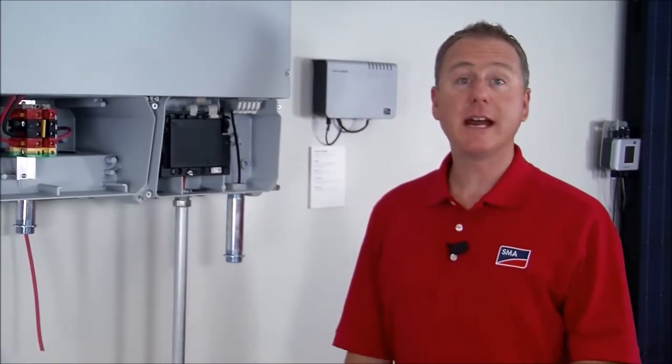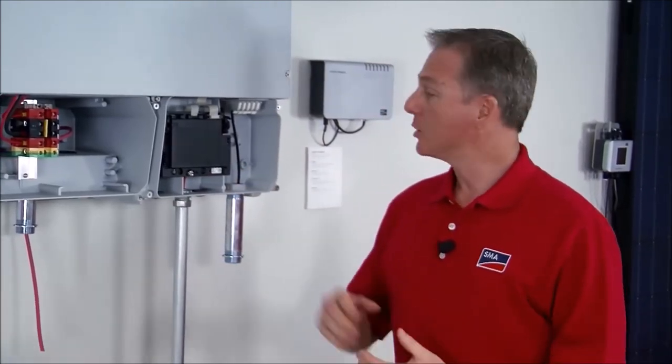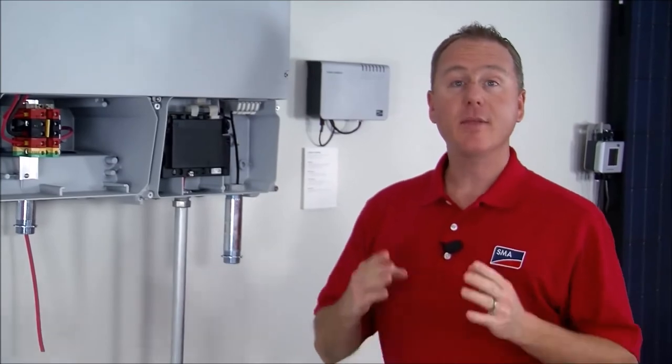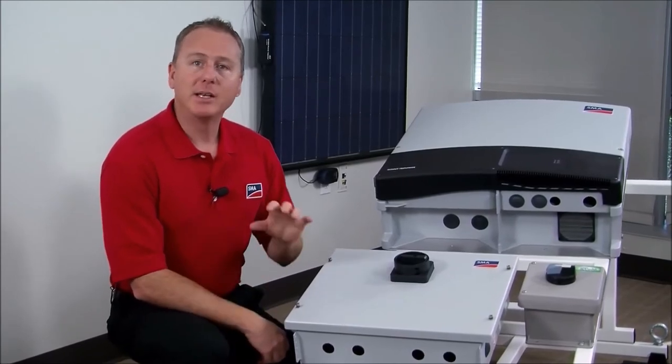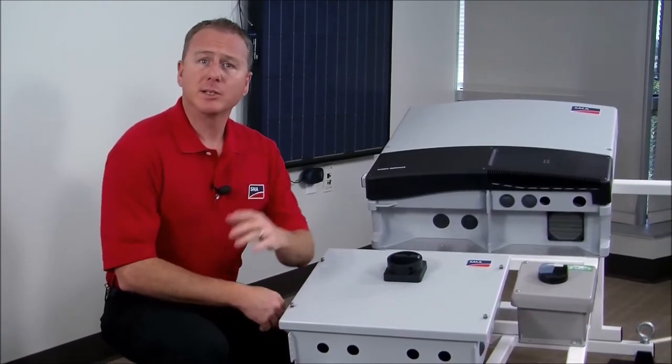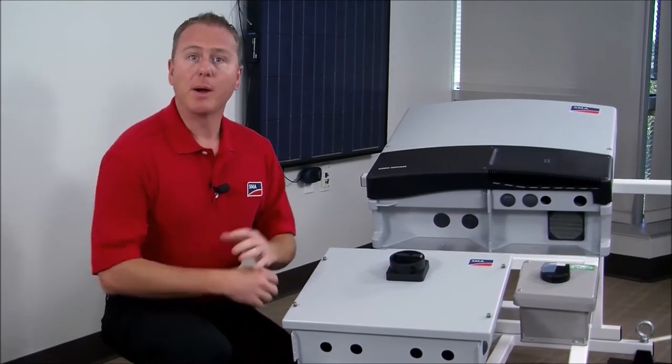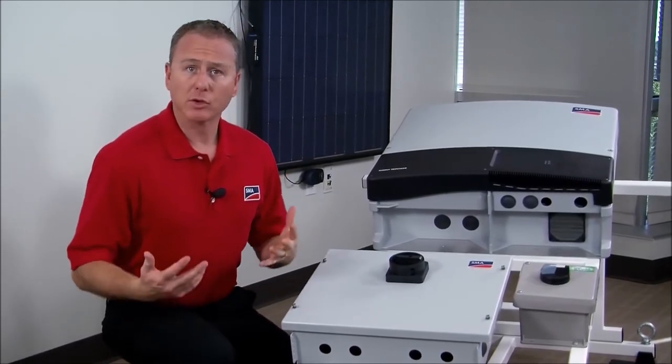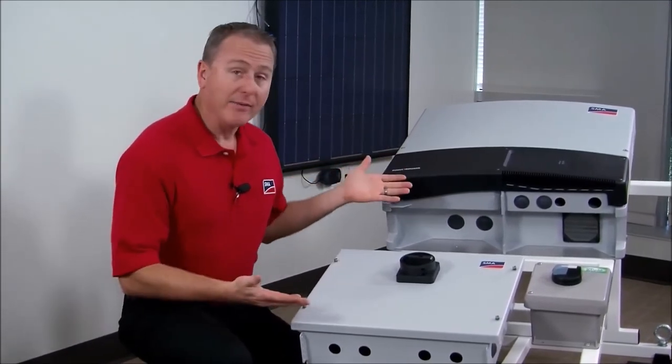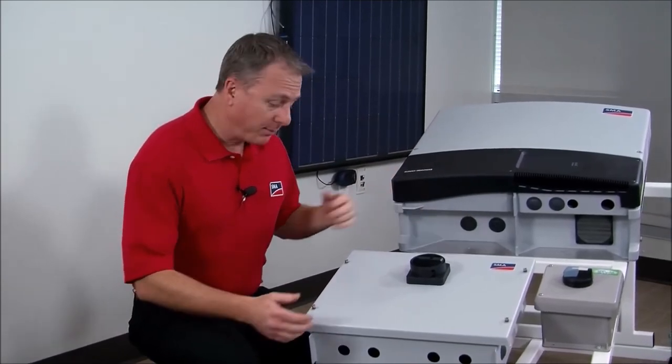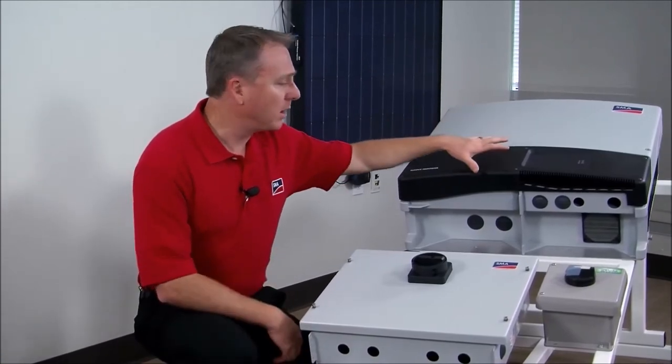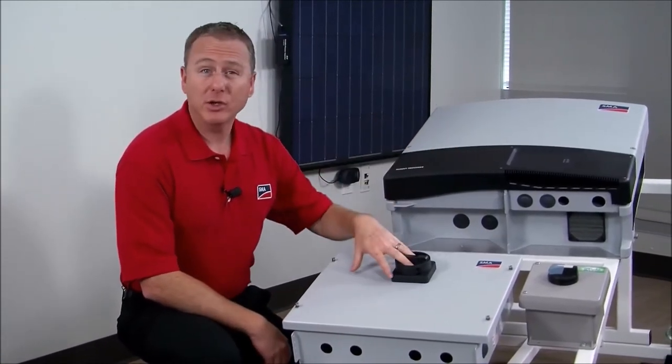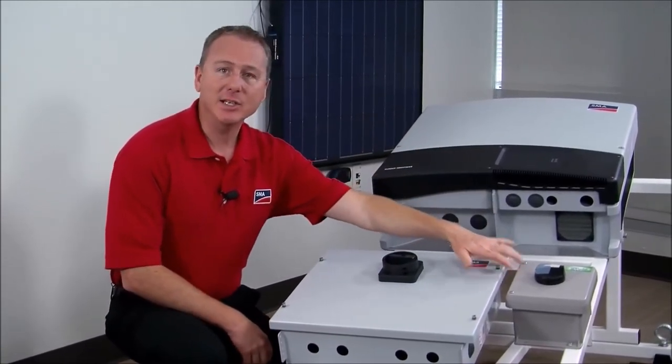Once the LCD is securely fastened the only thing left is to put the black cover back on and then commission the system. Now one of the versatile things about the tri-power is the many different ways that you can install it. In the previous segment we talked about installing the tri-power on a wall or some similar structure. Now here I have an alternate method using commercially available pre-made racking which you can install the tri-power, the connection unit, even the AC disconnect onto this structure.